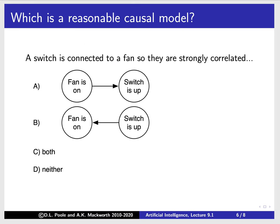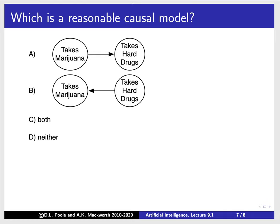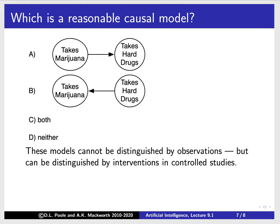Now let's look at what is a reasonable causal model. Here's a clicker question: a switch is connected to a fan, so they're both strongly correlated. Which is the more likely causal model — does changing the switch position cause the fan to be on, or does causing the fan to be on cause the switch to be up? You cannot distinguish these by observing the world. Here's another classic: if someone takes marijuana, does it cause them to take hard drugs? Does taking hard drugs cause them to take marijuana? This is the gateway hypothesis. Maybe it's the other way around — is it both, or neither? You cannot distinguish these by observations, but you can by interventions in controlled studies.